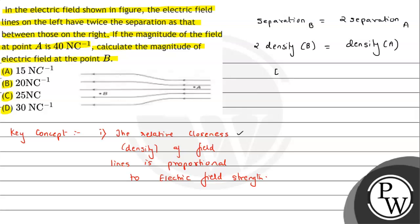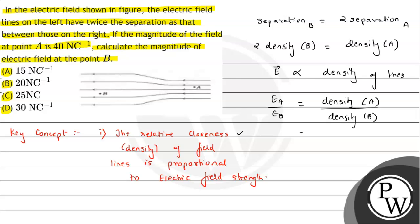Since electric field E is proportional to the density of field lines, we can write: Ea / Eb = density at A / density at B = 2. So Ea = 2 × Eb. With Ea = 40 N/C, Eb = 20 newton per coulomb. The answer is option B. I hope you understood the solution — all the best!